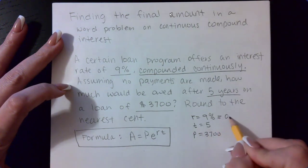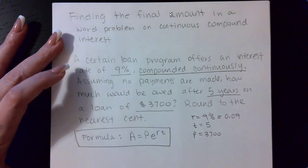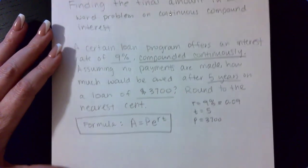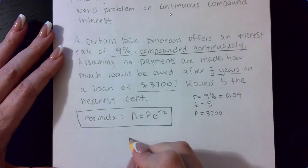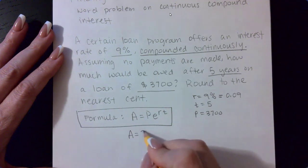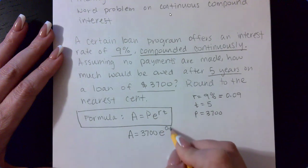Now, let's convert our rate into a decimal. And then we should be able to plug everybody in and calculate that final amount. So the final amount, A, is $3,700e to the 0.09 times five.